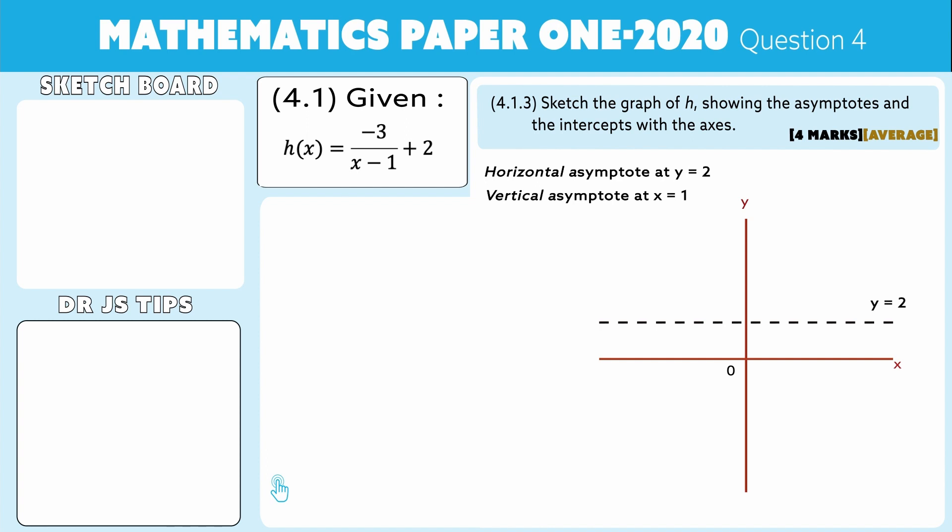Your vertical asymptote lies over here. They lie perpendicular to each other and also parallel to their respective axes. This is the equation of the vertical asymptote.